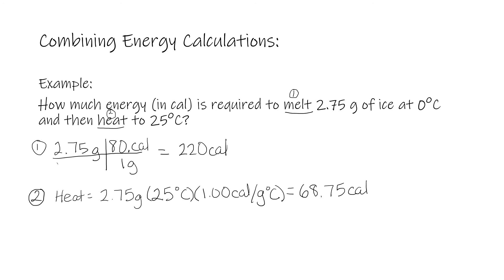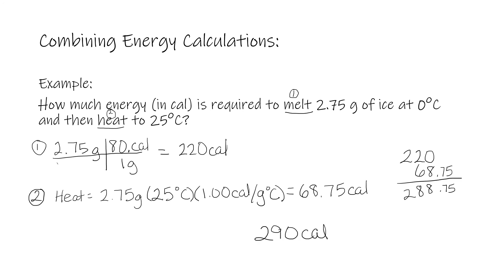The final step is to add those together: 220 plus 68.75 gives 288.75. Rounding to two significant figures — since our temperature value has two significant figures — we get 290 calories as our final answer. When doing problems involving energy calculations, make sure to look for those key words to determine which calculations to apply.